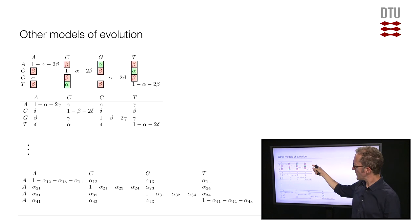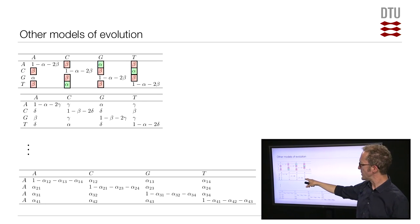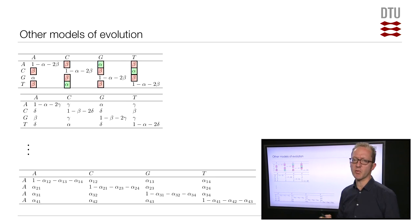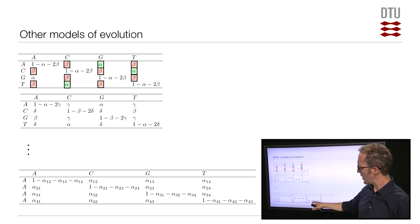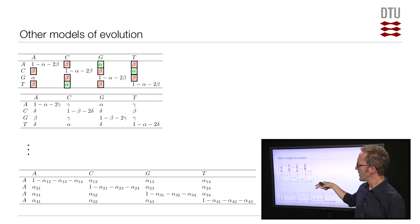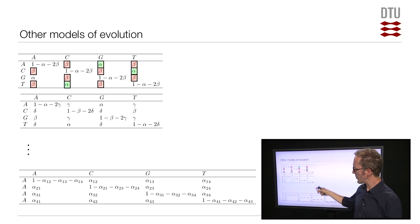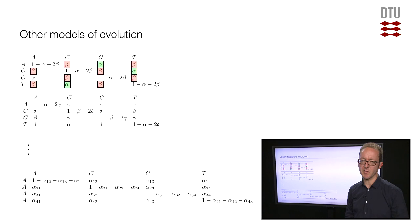We could add more parameters — saying that not only do transitions and transversions differ, but each specific substitution has its own rate, up to the point where every single substitution has its own rate. In all these cases, it's possible to do the math and think about the relationship between observed and expected distances, though not always a closed-form analytical solution.